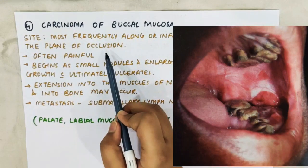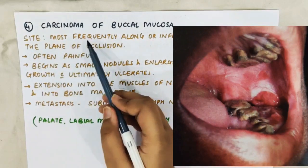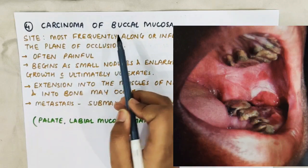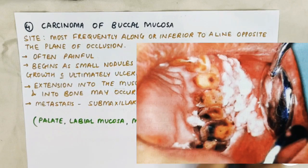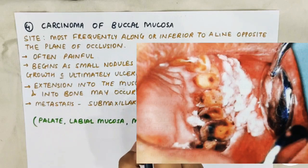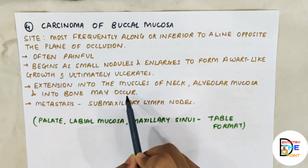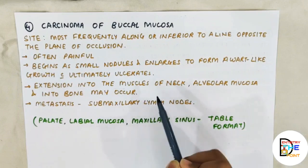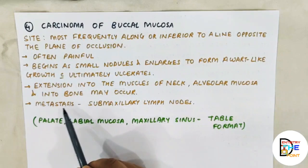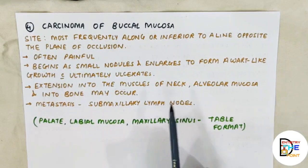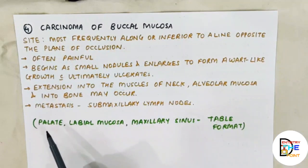Carcinoma of the buccal mucosa: the site is most frequently along or inferior to a line opposite to the plane of occlusion. It is often painful. It begins as a small nodule and enlarges to form a wart-like growth which ultimately ulcerates and bleeds. Extension into the muscles of the neck, alveolar mucosa, and into bone may occur. It may also spread to involve the submaxillary lymph nodes.